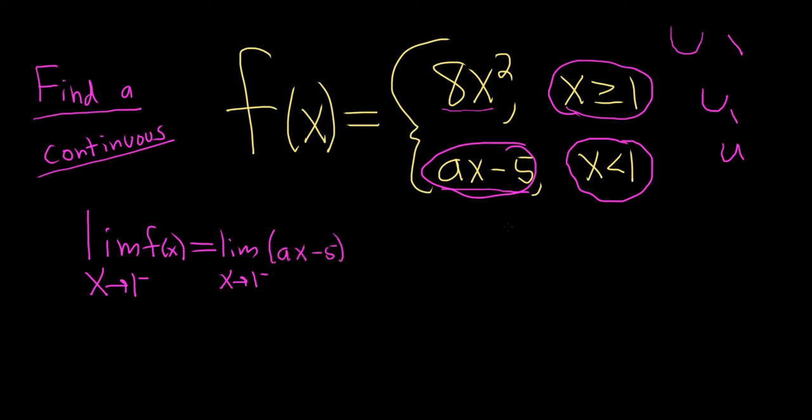we replace f of x with ax minus 5. Right, because from the left, x is less than 1. And if you don't see that, just draw a picture. Here's 1, here's x, because you're approaching from the left. Oh yeah, it's a smaller number. x is less than 1. So we use this piece.